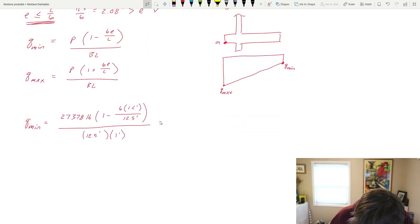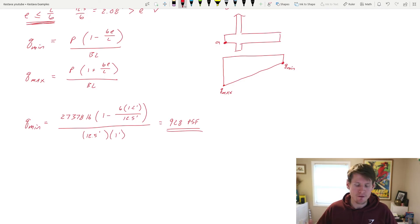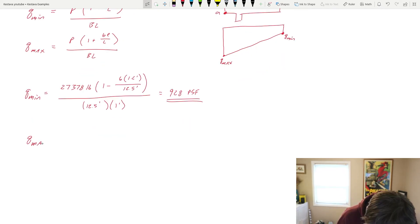Let's plug everything in. That gets you 928 PSF. This is a pressure, a bearing pressure. So PSF, we're in line. And then Q max is the same thing, but with a plus. That gets us 3,452 PSF.